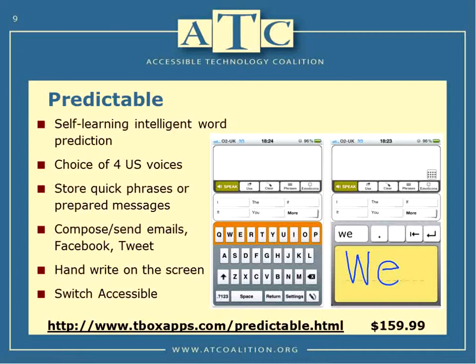Predictable gives you a choice of four U.S. voices, three British voices, and two Australian voices. It allows you to store quick phrases or prepared messages — things like 'Hi, how are you?' or 'Hi, my name is Karen' or 'I use a communication device to talk.' You can compose and send emails, post to Facebook, and send out a tweet. We cannot undervalue the importance of giving students access to social media — all kids love to communicate through chat messages, text messages, on Facebook and on Twitter. An app like this makes it very easy for a child to compose a message and post it.